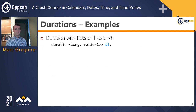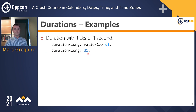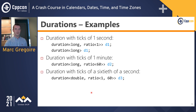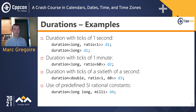Here I'm defining d1 as a duration with a tick period of one second using ratio<1>, with the number of ticks stored as a long integer. Since one second is the default for a duration, you can omit it and write it more shortly. To define a duration where ticks are one minute, specify ratio<60>. For a sixtieth of a second, use ratio<1,60>. You can also use predefined SI aliases — for example, defining d4 as a duration in milliseconds stored as long long.